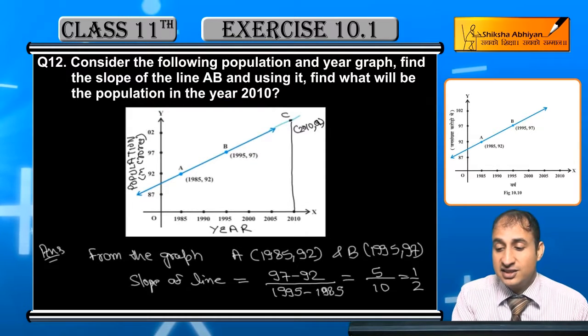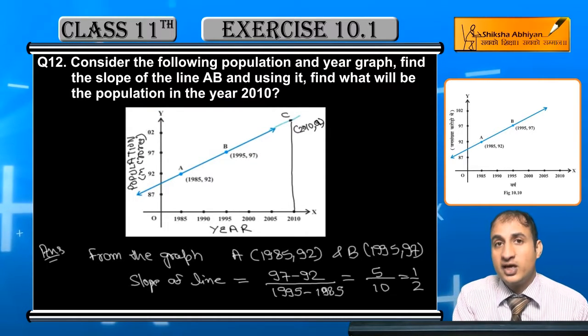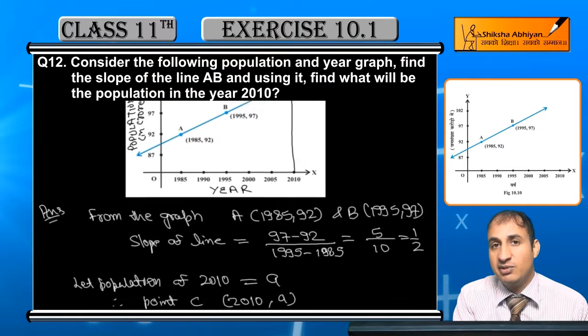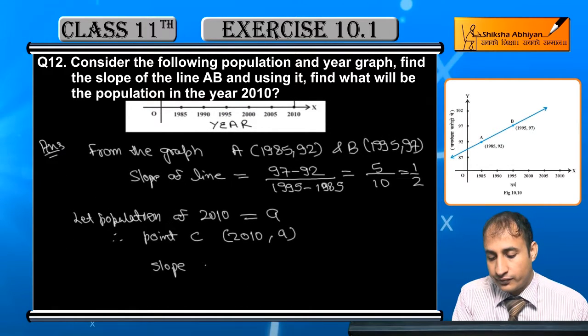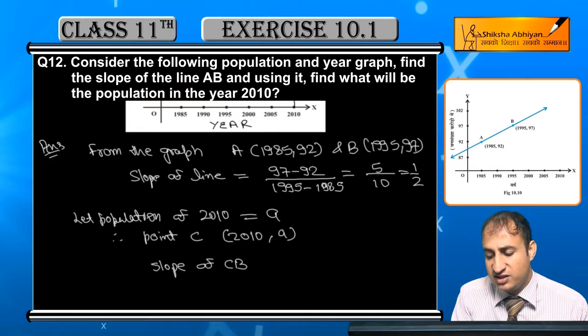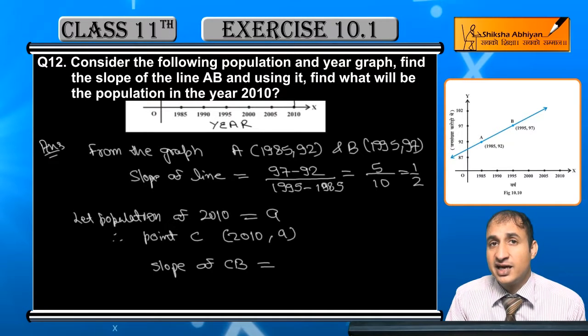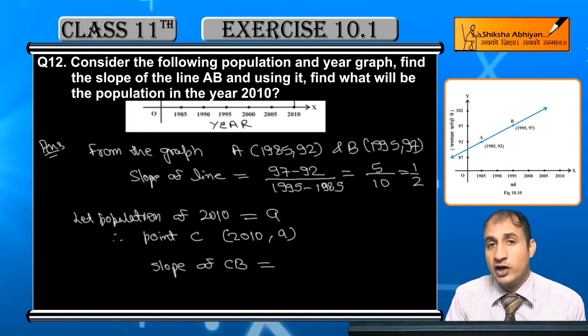Now, if we take the slope of C and B, the slope will be equal to AB's slope because we are on the same line. Now, slope of CB. I'll take C's coordinate as x2, y2.